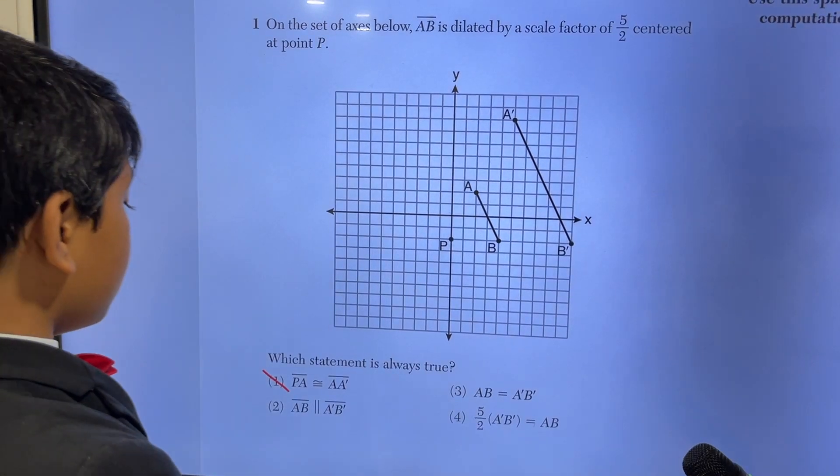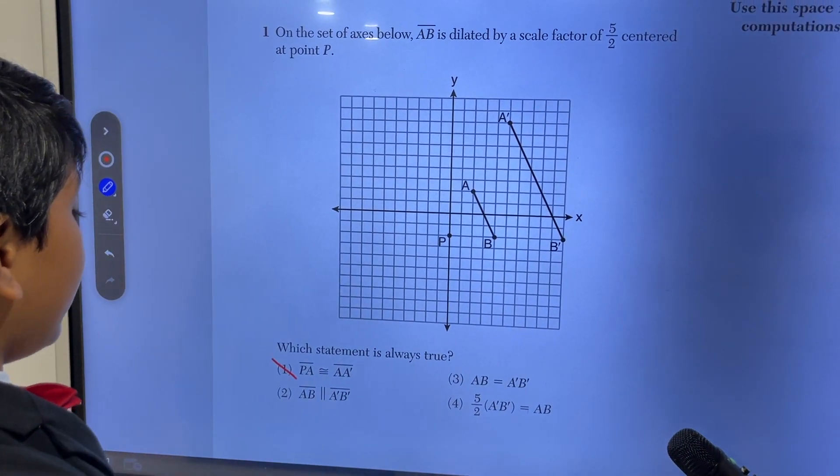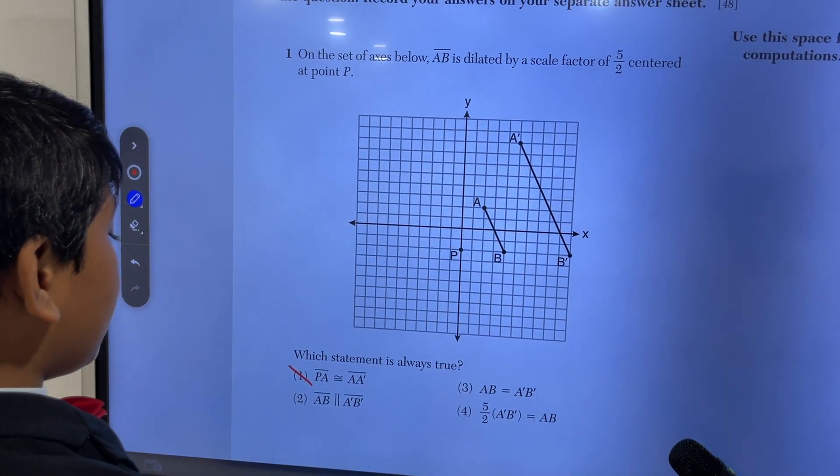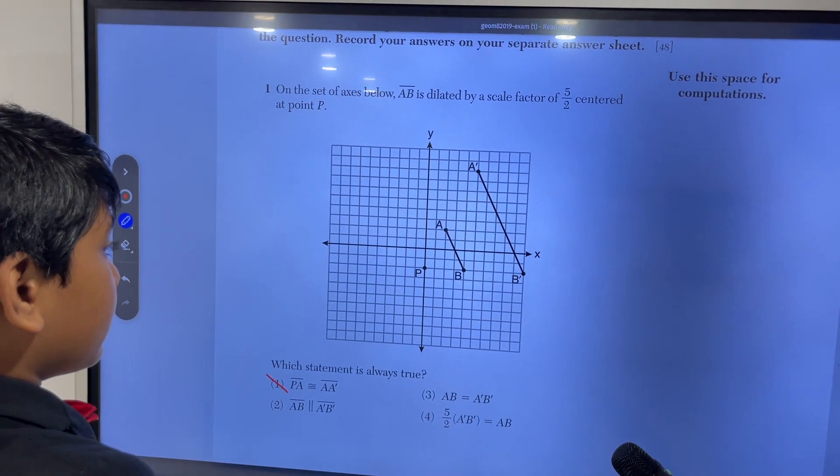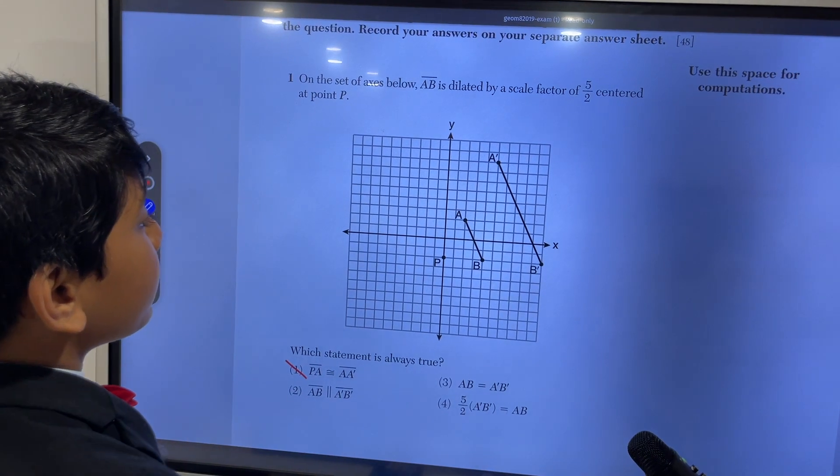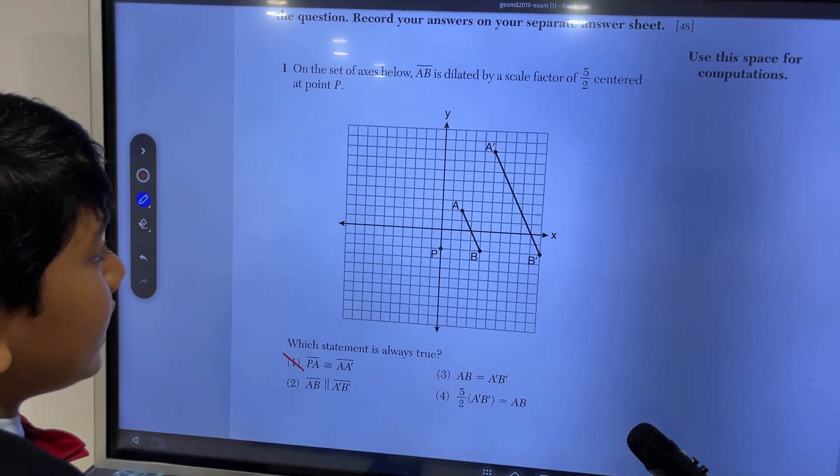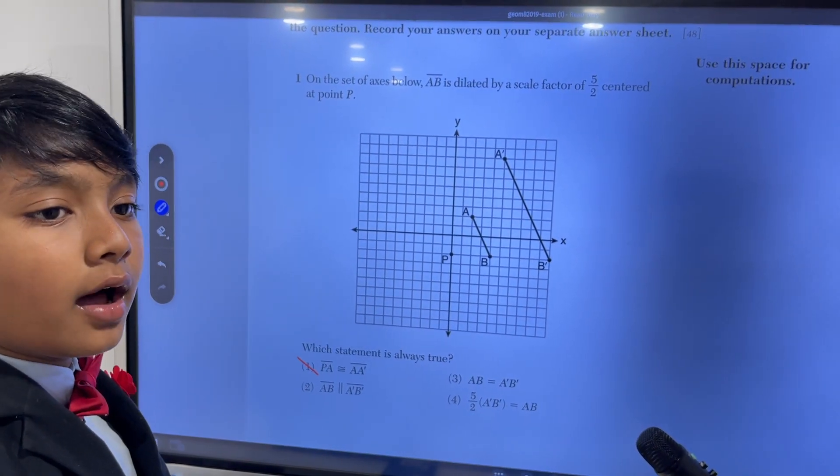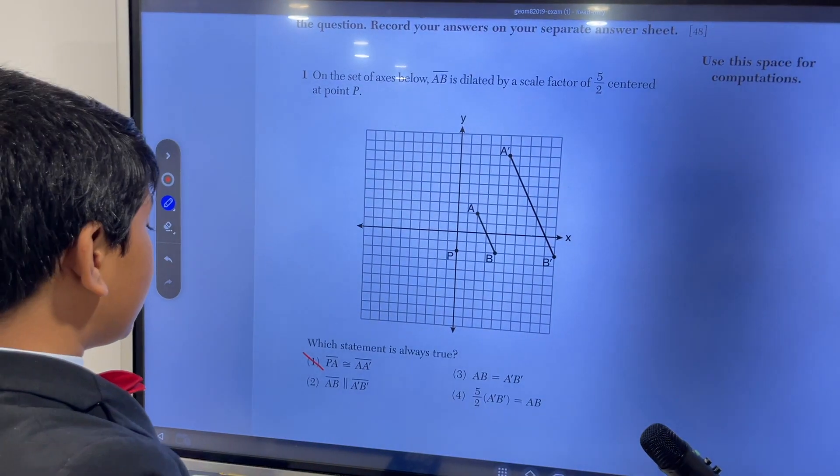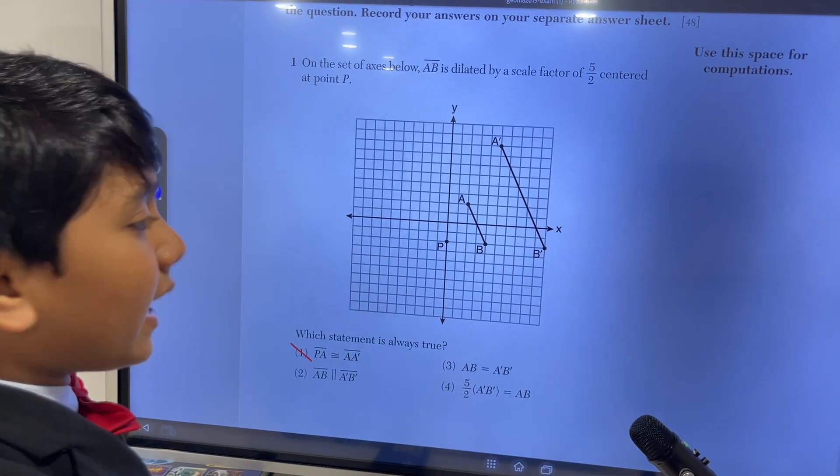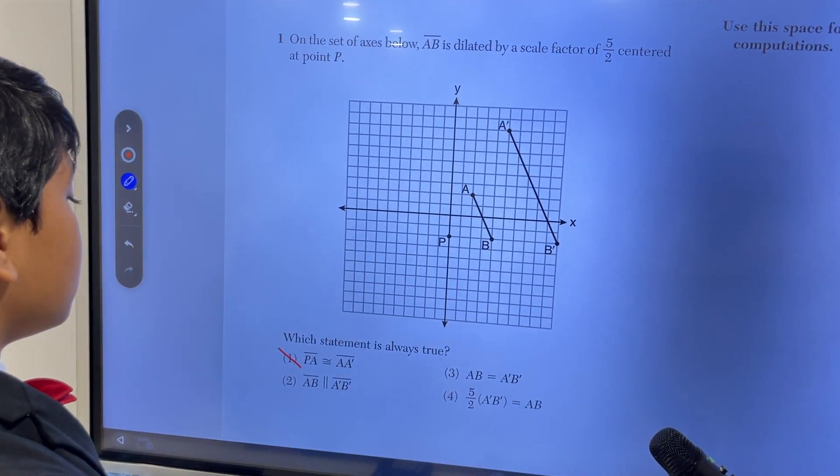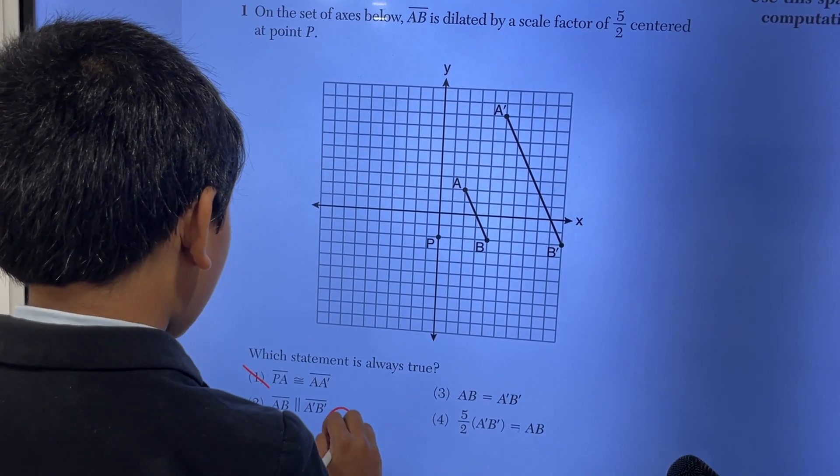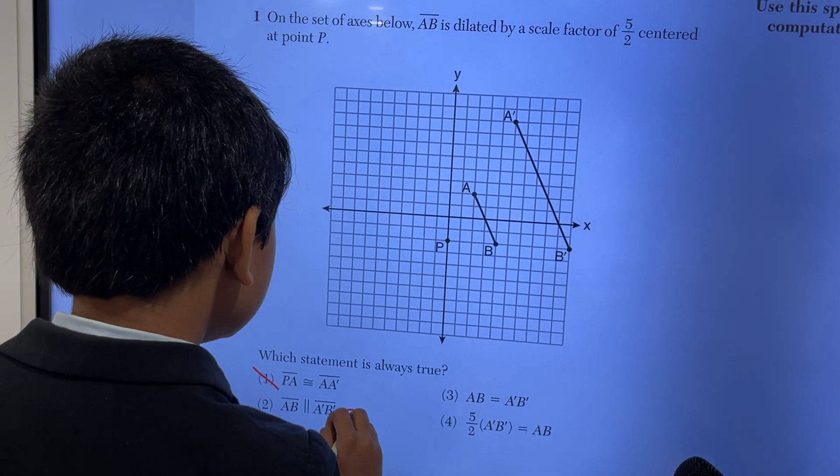What about 2? AB is parallel to A prime B prime. Well, that is true in this picture, clearly. And that's because A prime B prime does not have any changes in shape, only in size. That's essentially what dilation does. So in any case where something is dilated, it will still have the same slope. So I'm going to keep my eye on that one because it is always true.